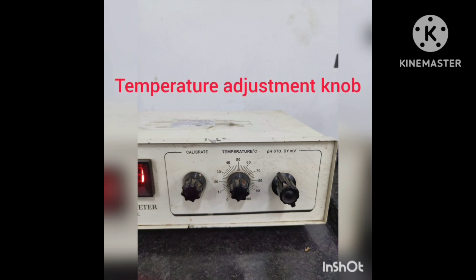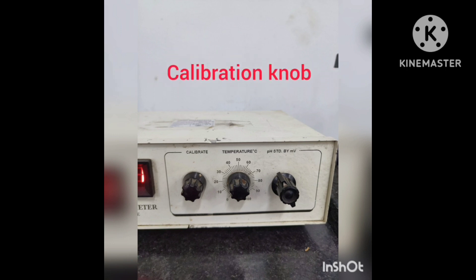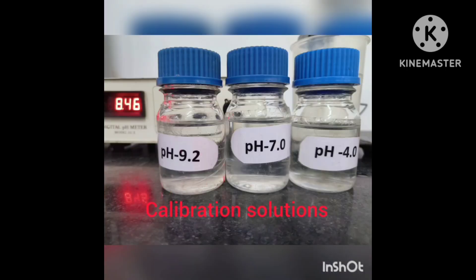The second knob is for temperature regulation. The temperature is adjusted according to the room temperature. The third knob is for calibration of the calibration solution.